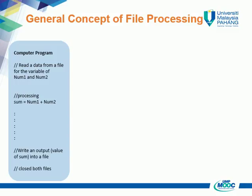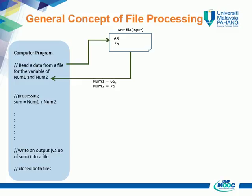Let's discuss this in more detail. Read the data from a file. Before that, we assume the input file with data is available and ready for read processing. The file contains two values: 65 and 75. Since the read instruction is for two variables, num1 and num2, the values in the file will be assigned — 65 to num1 and 75 to num2. Now num1 stores 65 and num2 stores 75.